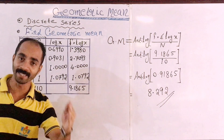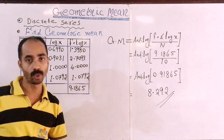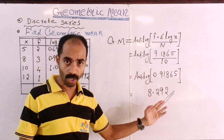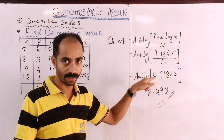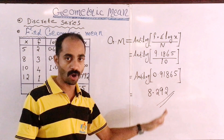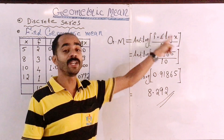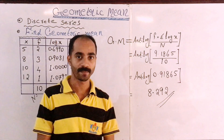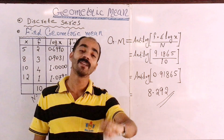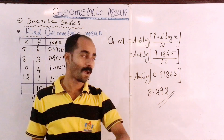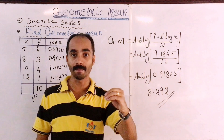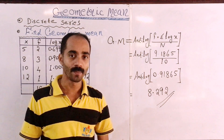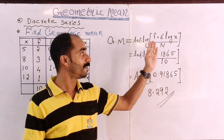The geometric mean is equal to the Antilog of F into Sigma log X, divided by N.